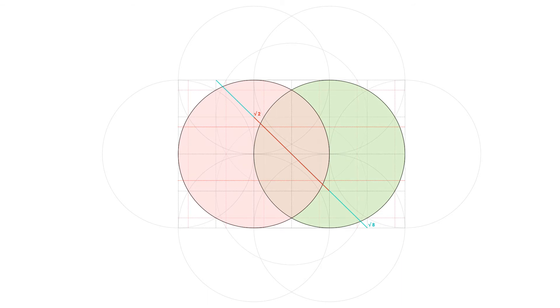They are the missing part at the top of the vesica. The difference between root 3 and root 4, halved.